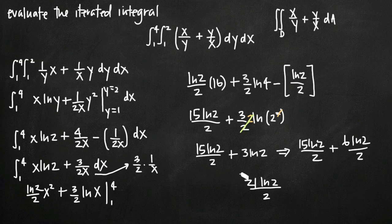And that's our final answer: 21 natural log of 2 over 2. This is the value we get when we evaluate the iterated integral.